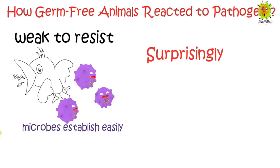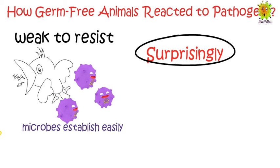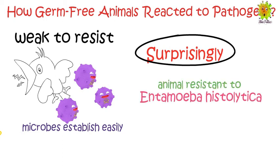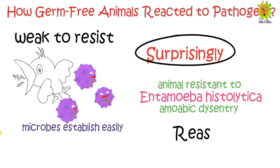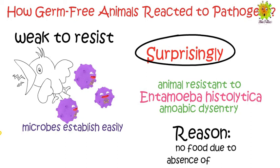Surprisingly, germ-free animals are completely resistant to Entamoeba histolytica, which causes amoebic dysentery. Entamoeba histolytica cannot cause disease in a germ-free animal because it feeds on bacteria. Since there are no bacteria present in the animal host, E. histolytica cannot find its food and is unable to survive.